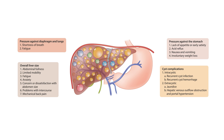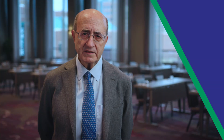Polycystic liver disease most often causes no symptoms and does not impact the synthetic or secretory capacity of the liver. In some cases, however, symptoms may develop due to mass effects causing abdominal fullness, distension, and mechanical back pain, or compression of other organs such as the lungs and stomach, or veins such as the hepatic or portal veins or the inferior vena cava, or of bile ducts. Symptoms may also occur with cyst hemorrhages and infections.